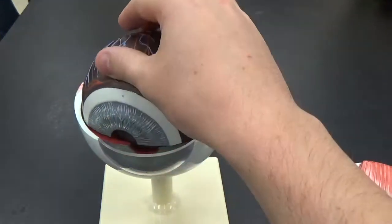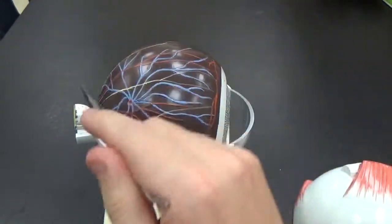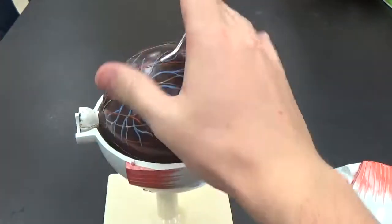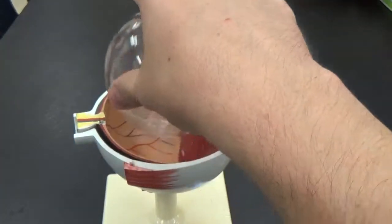Coming from the back of the eye is your optic nerve. I'm going to remove a few things. We'll come back to those.